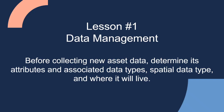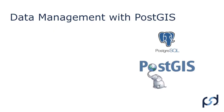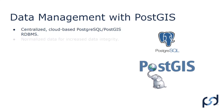Lesson number one: data management. This is really the first phase. Before collecting new asset data, determine its attributes and associated data types, spatial data type, and where it will live. When setting up an enterprise GIS solution, we set it up with Postgres — the relational database management system — and PostGIS, the spatial extension that connects to Postgres. It's a centralized cloud-based Postgres/PostGIS relational database management system. We try to normalize the data as much as possible to increase data integrity, eliminating any data duplication that exists within the tables, or ensuring new data is collected in a normalized way.